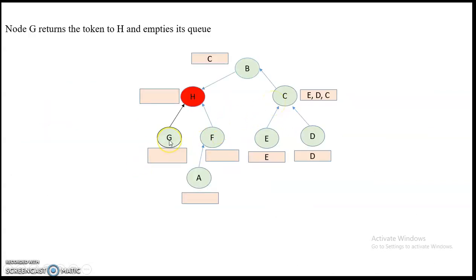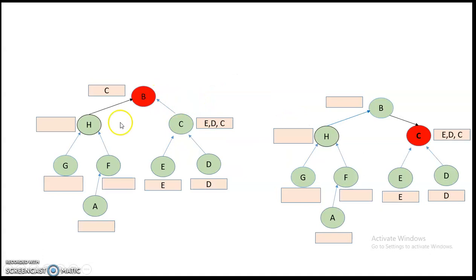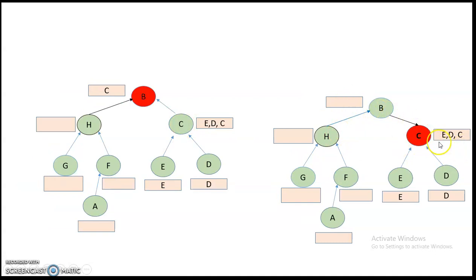G returns the token to H. The content at H's queue is B, so the token is passed to B and H's queue becomes empty. B's queue contains C, so the token is then passed to C and B's queue becomes empty.